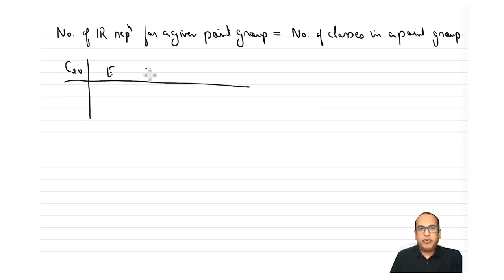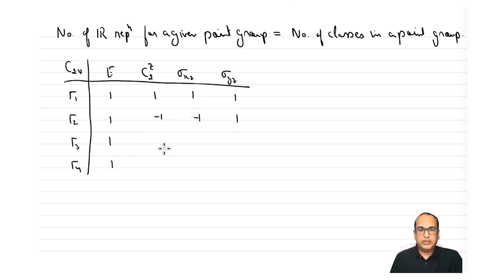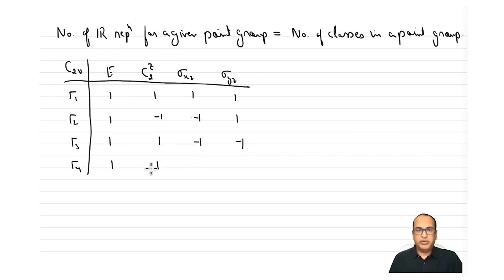For the C2v point group, there are four classes — each element is its own class since it is a cyclic group. Therefore, there are exactly four irreducible representations: τ1, τ2, τ3, τ4. These can be written down by assigning characters or by unit vector transformations.